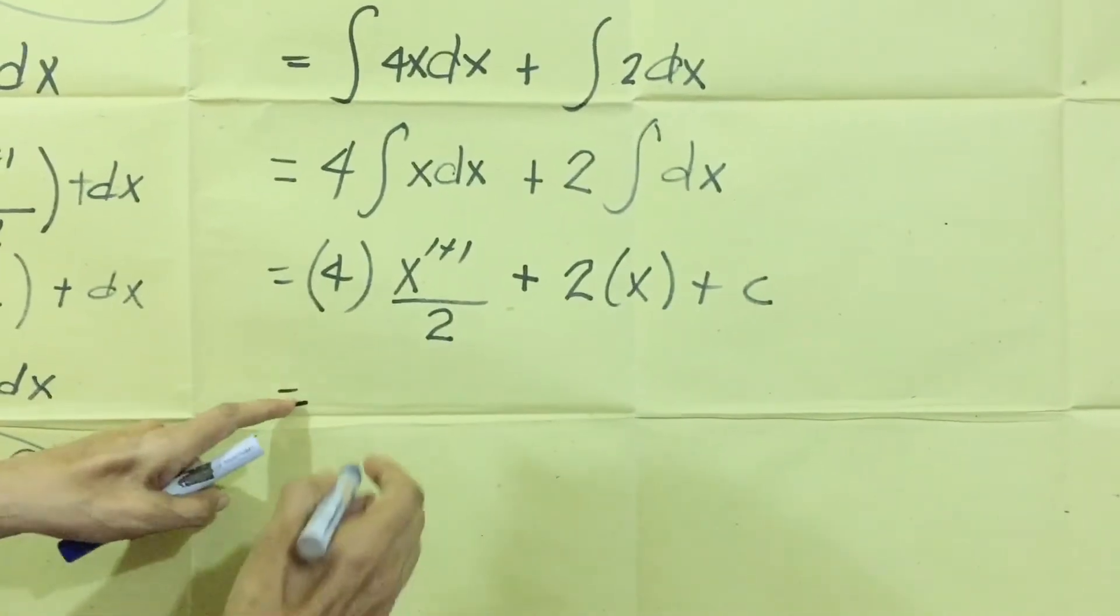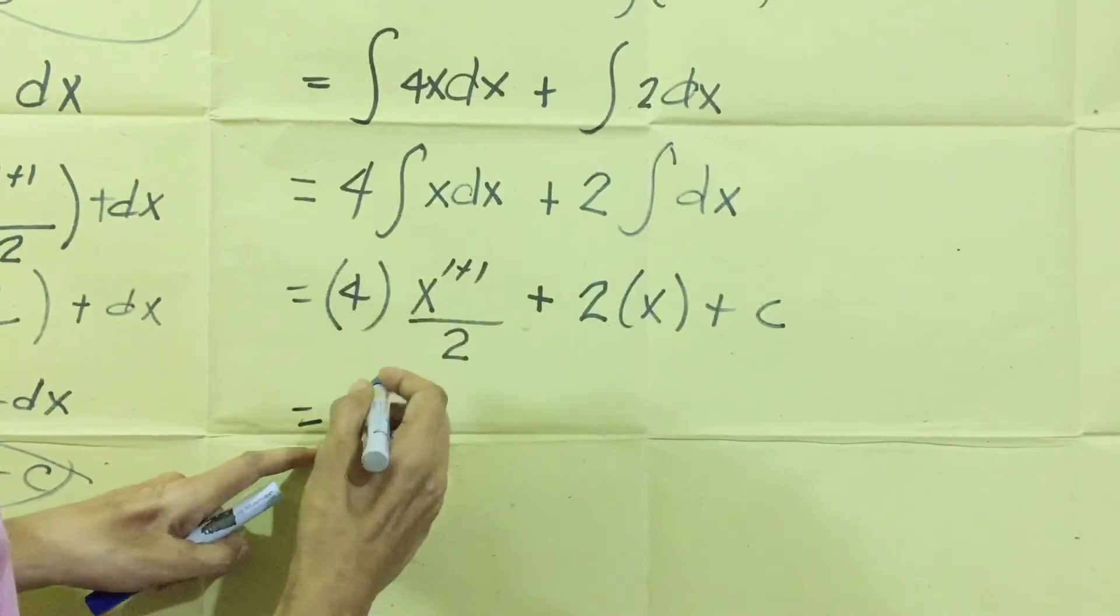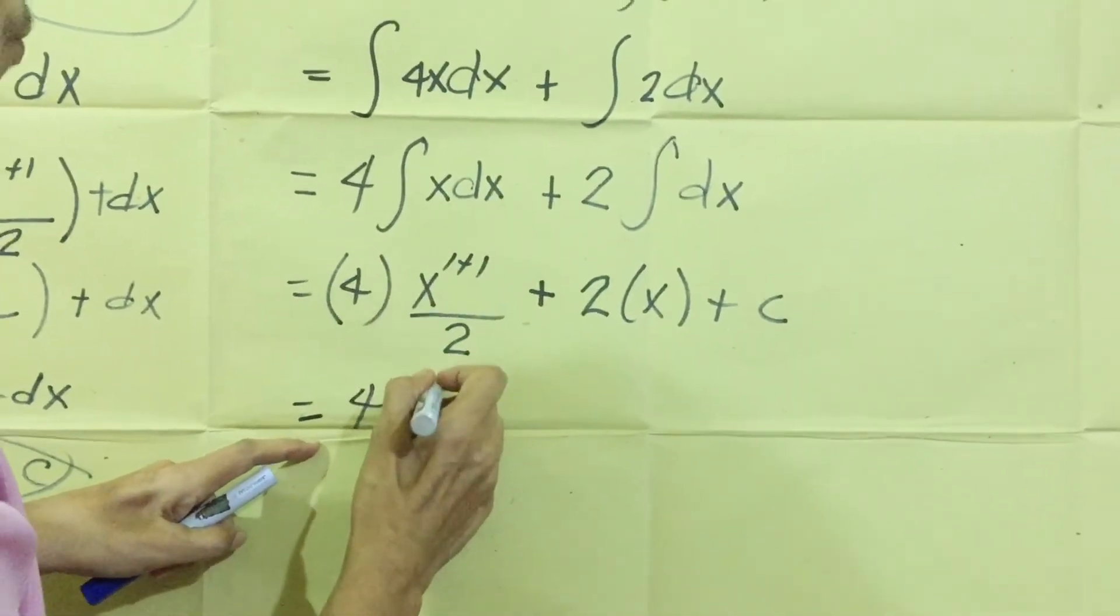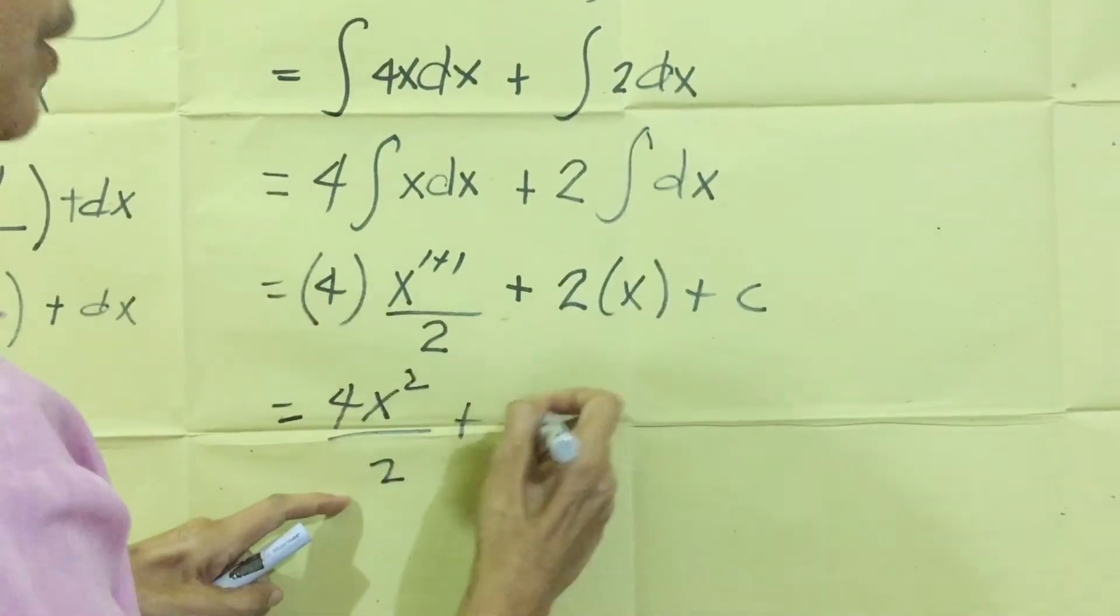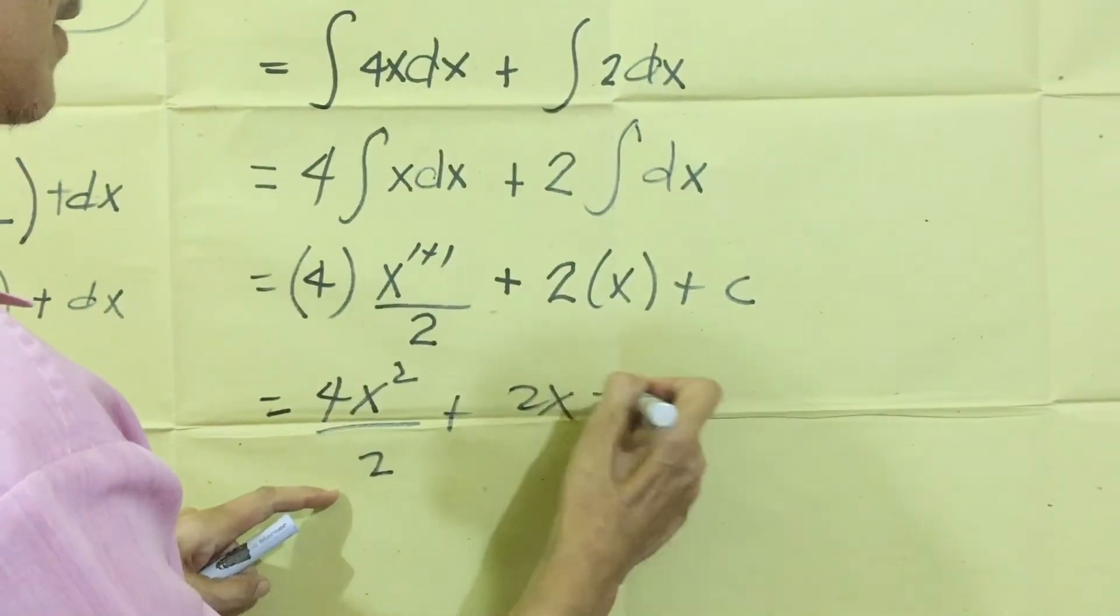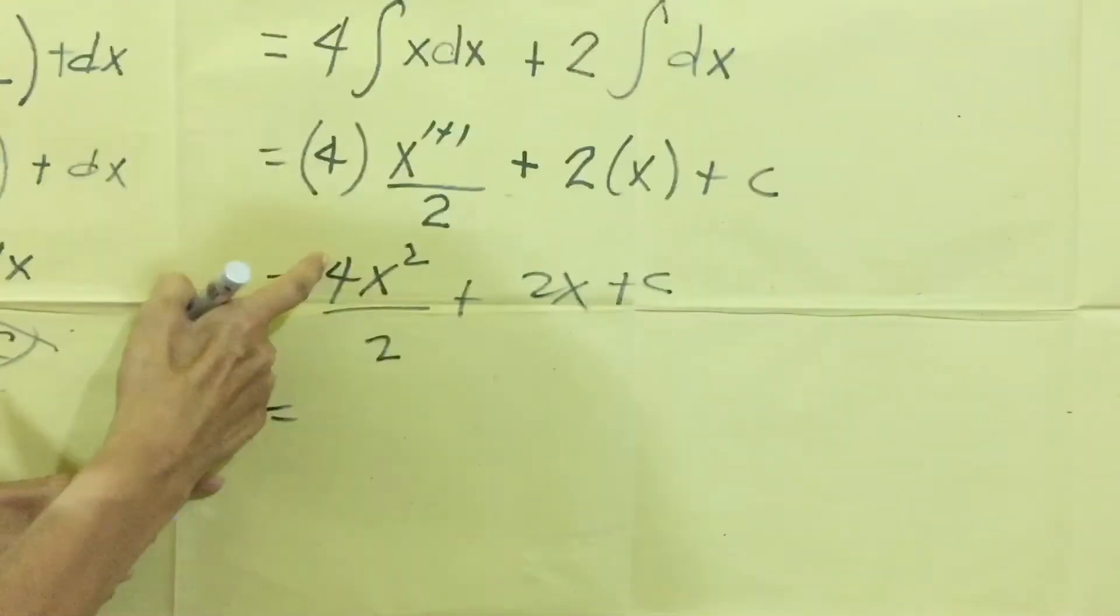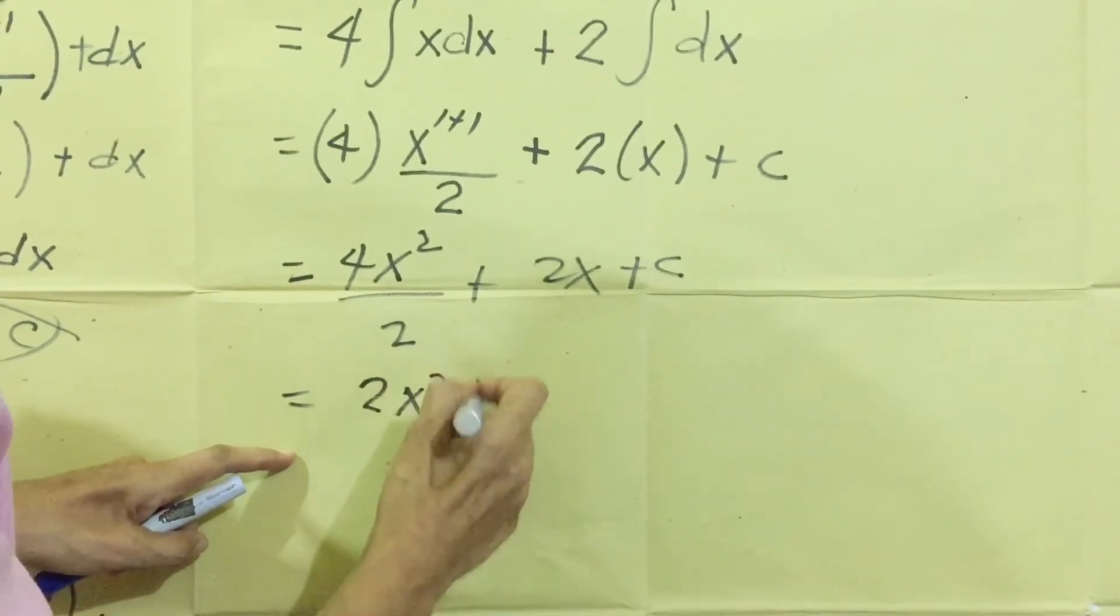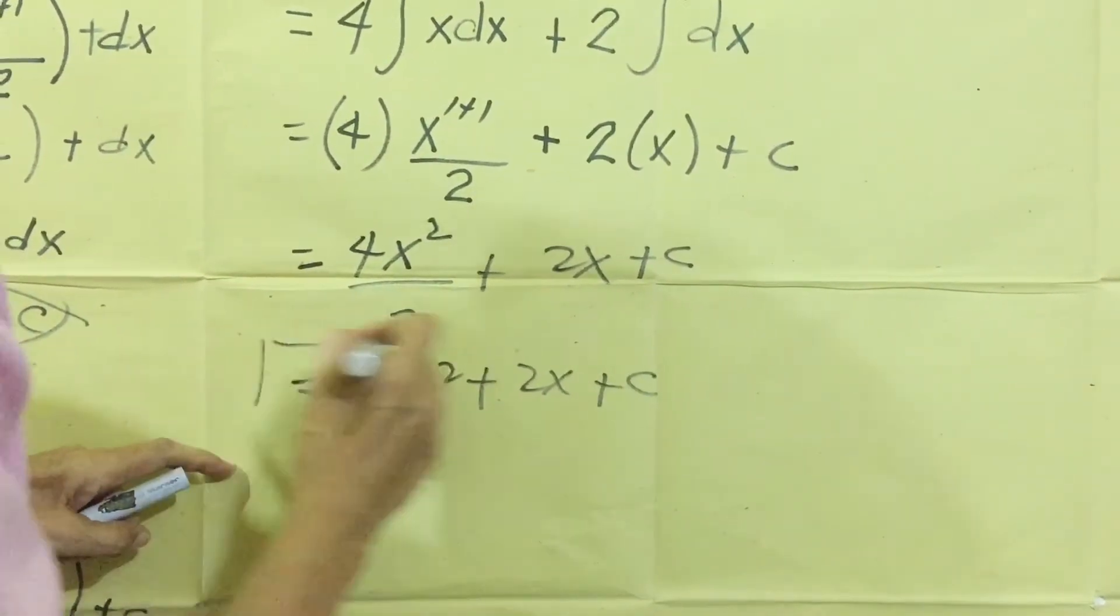Then we are going to simplify now. Four times X, X plus one, two, the exponent. So we have four X squared over two, plus, two times X, two X, plus C. Then again, we divide. Four divided by two. The answer is two X squared plus two X plus C. This is our answer now.